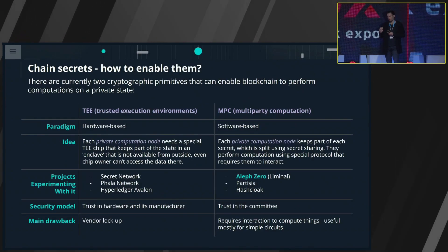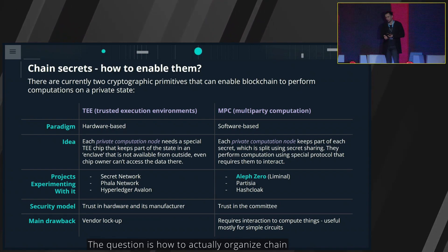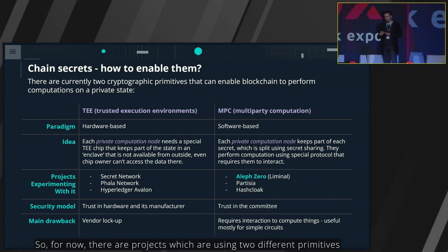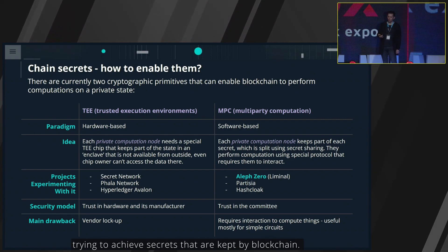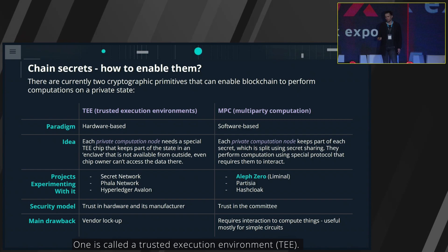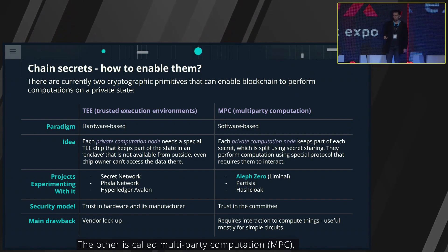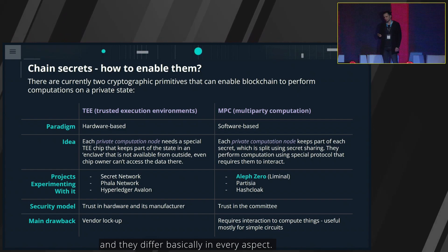Without chain secrets, it's impossible to reveal results only at the end, it's easier to organize collusion, and possible to back-run elections. There are currently two different primitives projects use to achieve secrets kept by the blockchain: trusted execution environments and multi-party computation, and they differ in basically every aspect.